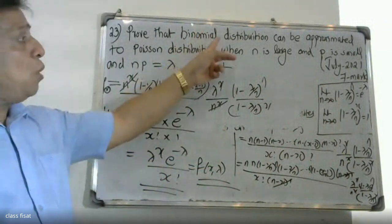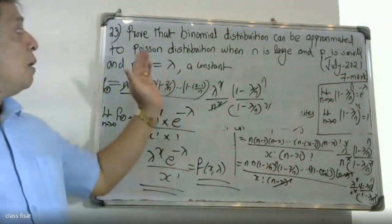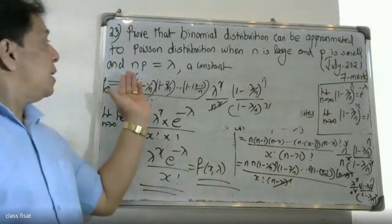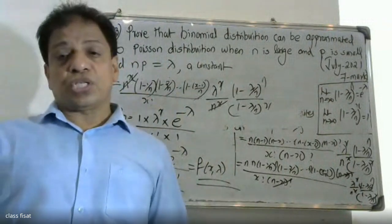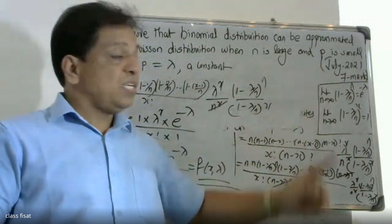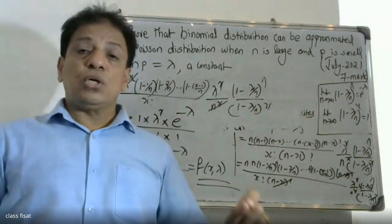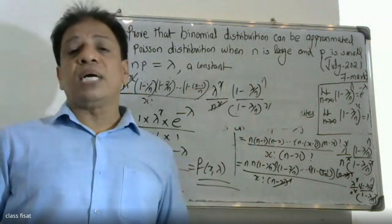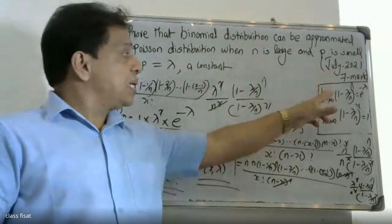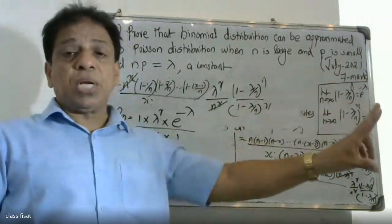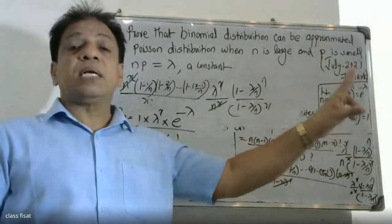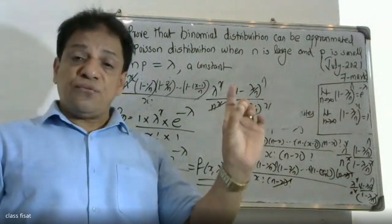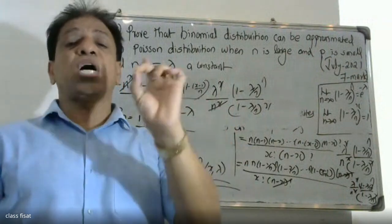That is why the binomial distribution can be approximated to the Poisson distribution when n is large, p is small, and np is equal to lambda, a constant. The result is that np equals lambda, and nCx simplifies to give lambda raise to x times e raise to minus lambda divided by x factorial.